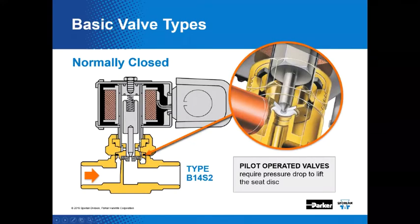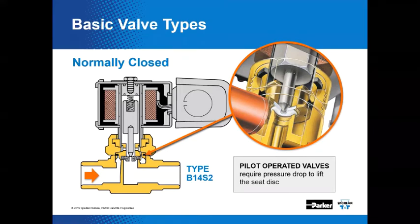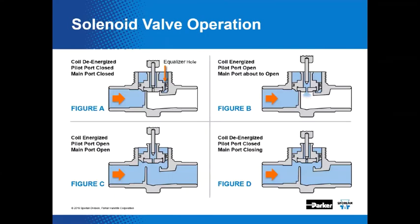The second type is pilot-operated: when you apply current to the coil and move the plunger, that opens a pilot port, which allows line pressure to assist in opening the valve and allow full flow. In a pilot-operated valve, the stem and plunger assembly opens a pilot port, releasing pressure that may be on top of the disc. The disc then moves upward, allowing the main valve port to open. Next, we'll go through the four phases of operation for a pilot-operated solenoid valve.